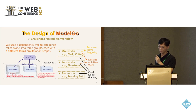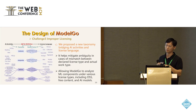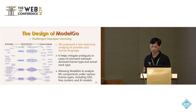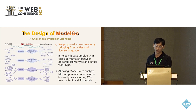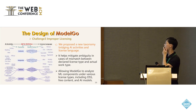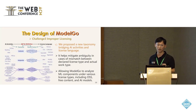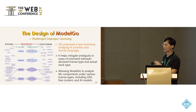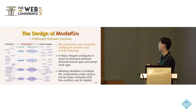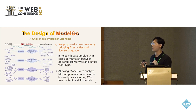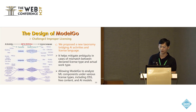Because we have multiple types of licenses, we provide a new taxonomy to bridge AI activity concepts and license language. For example, the term 'aggregate' in license language is very different from the concept in machine learning — for instance, federated learning uses model aggregation, which is very different. So we propose a new taxonomy to map machine learning concepts to license language. By this way, we can analyze models published with software licenses or data licenses.